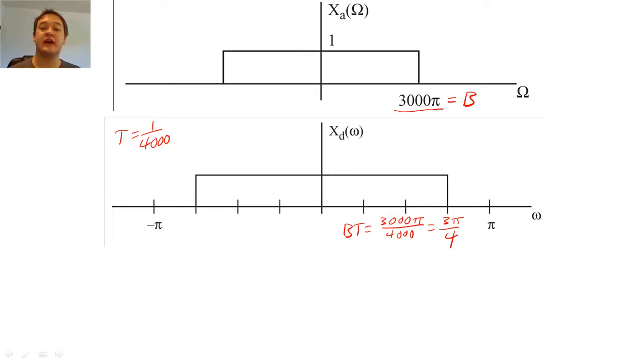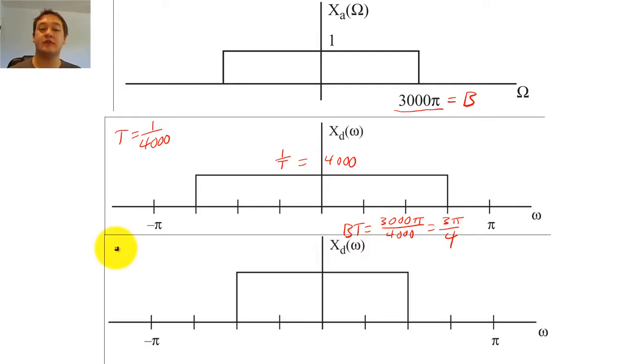We would also scale the height of the digital filter to 4000. If we changed our sampling frequency to 6000 hertz, the band limit of the digital filter would change to pi over 2, and the height of the filter would scale to 6000. Notice that the area under the curve is the same for all three spectra.